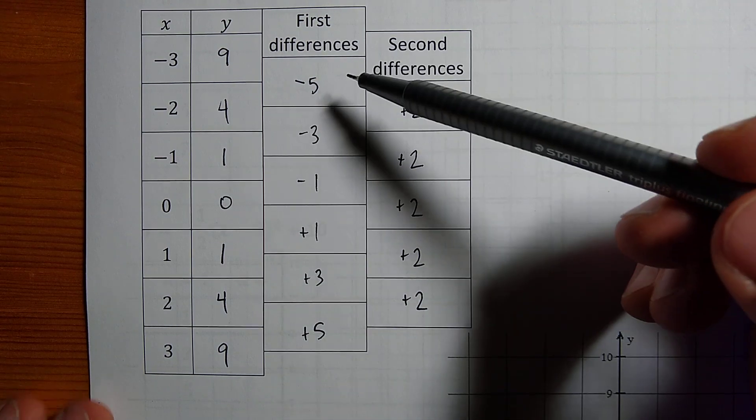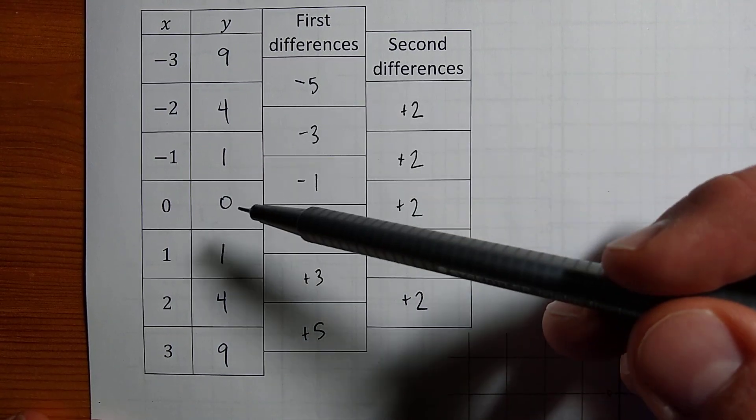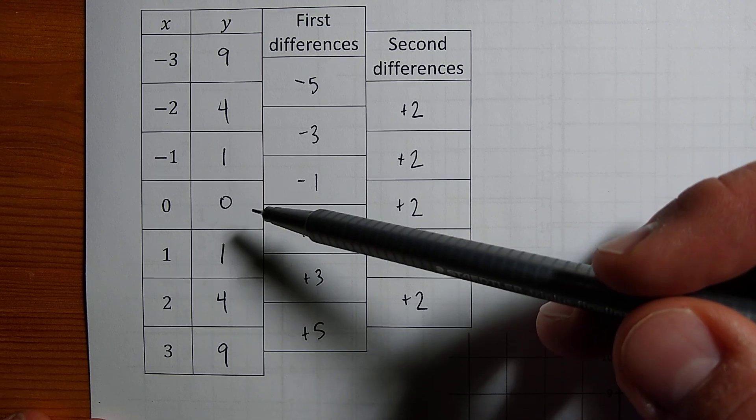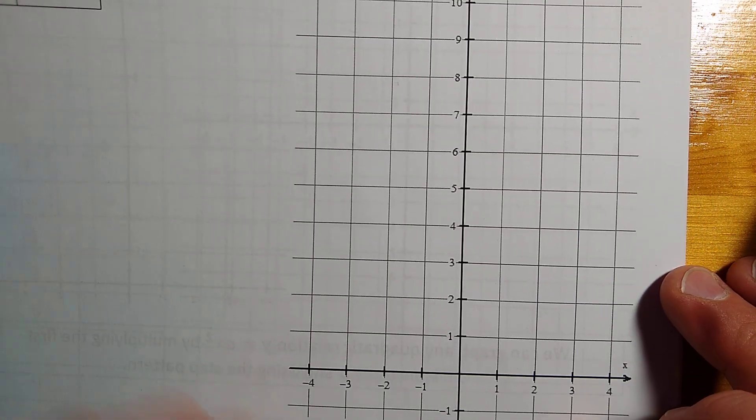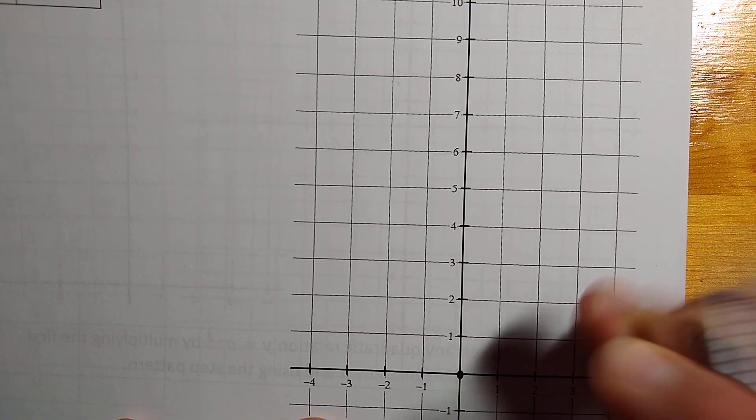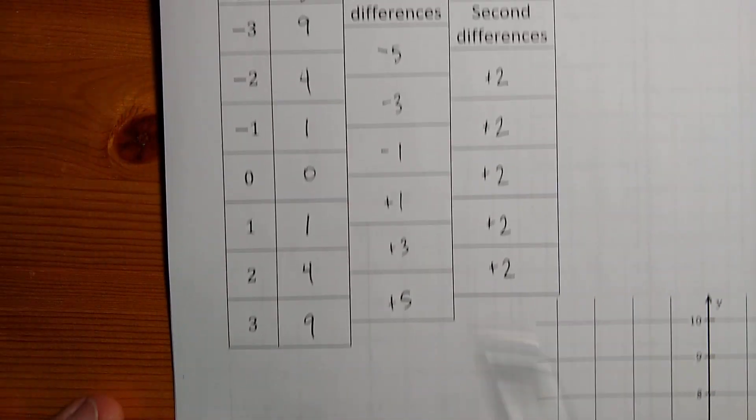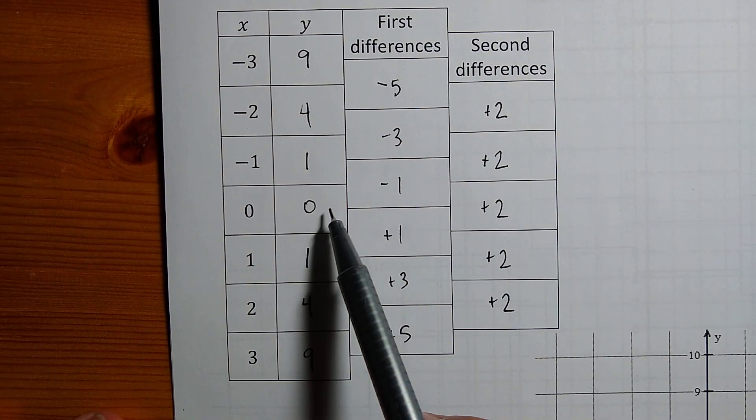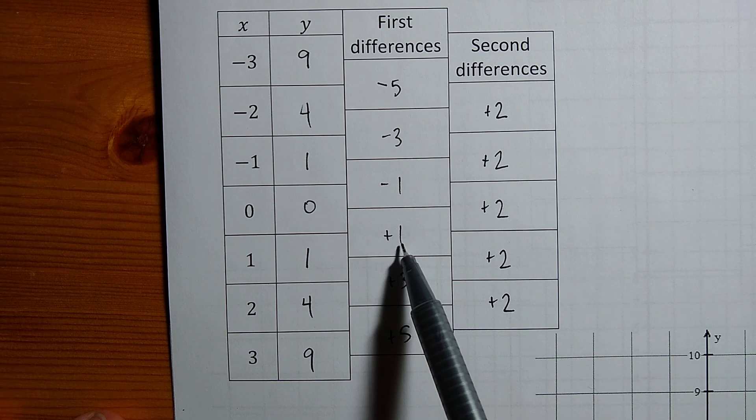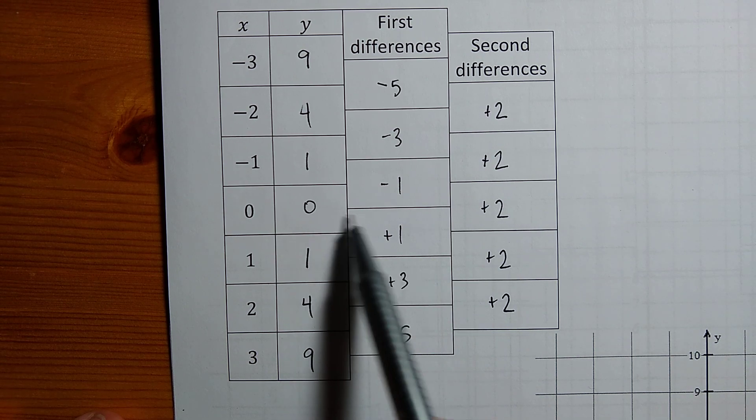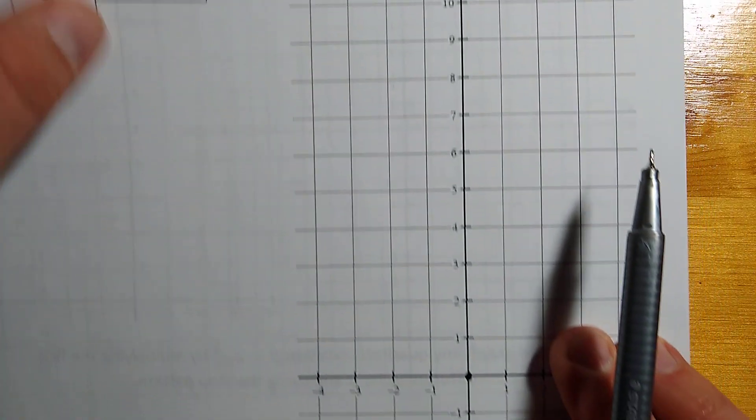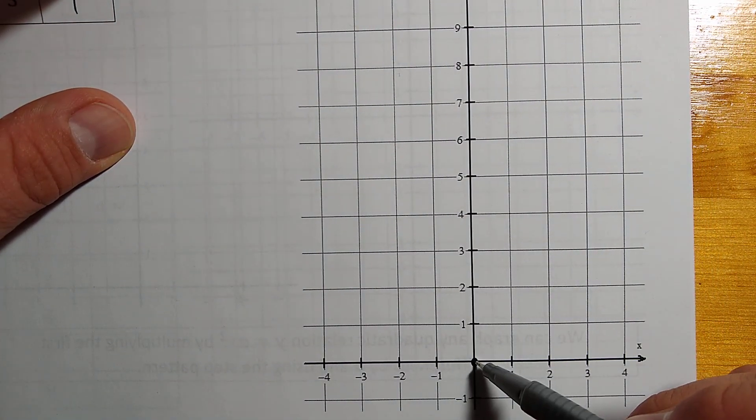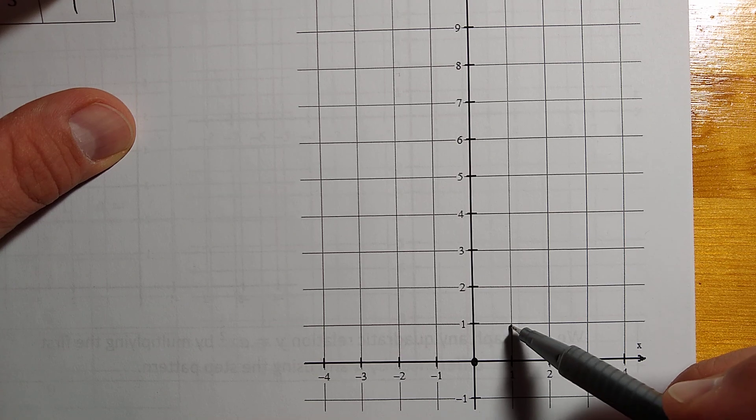So the first differences actually tell us quite a bit about how to graph this curve. I'm going to start at 0, 0. I'm going to have to sort of flip back and forth, so apologies for that. Now what the first differences tell us is that if I'm at 0 and I want to go to the next point, I should go up 1. So from 0, I'm going to go up 1, and I'll end up at the y value 1.